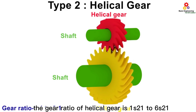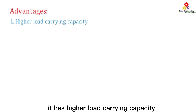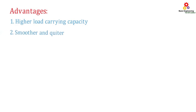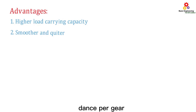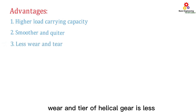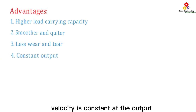The gear ratio of helical gear is 1:1 to 6:1. Advantages of helical gear: It has higher load carrying capacity. Helical gear operates smoother and quieter than spur gear. Wear and tear of helical gear is less. Due to constant meshing, velocity is constant at the output.